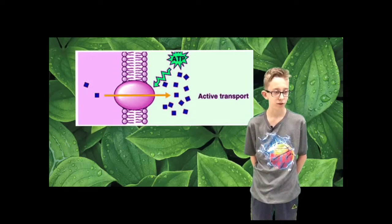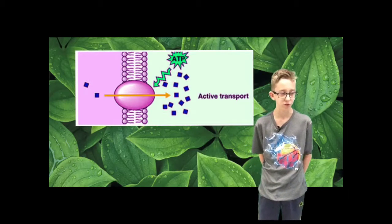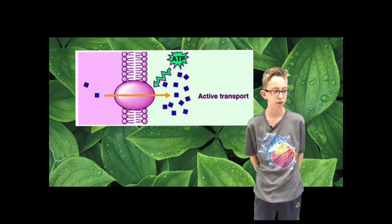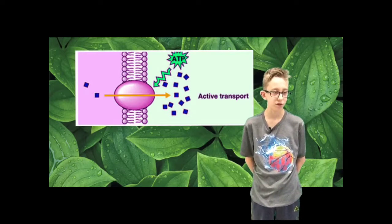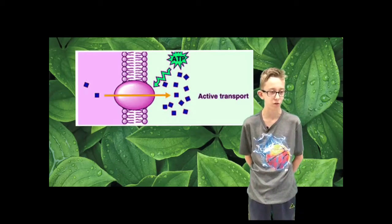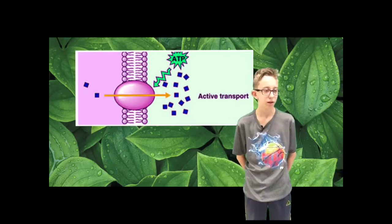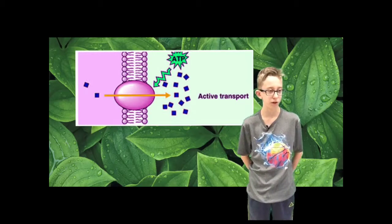One method of active transport is to use an ATP to make protein channels force a molecule like potassium into the cell. Another method is to send out part of the cell membrane to create a vesicle and escort it through the opening. This only occurs when the cell membrane has no protein channels.